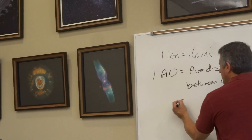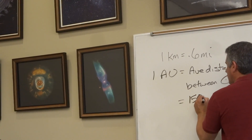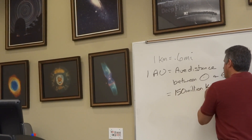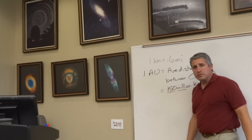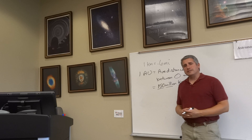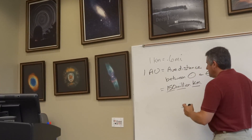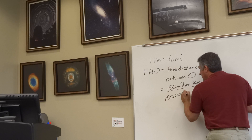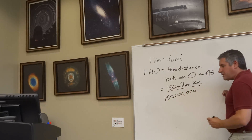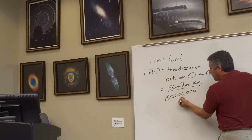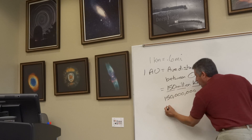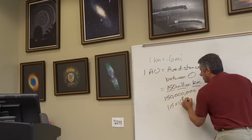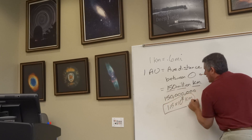The average distance between the sun and the Earth is 150 million kilometers. As we learned to write in scientific notation, 150 million is 1.5 times 10 to the 8 kilometers. That is one astronomical unit.